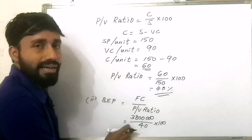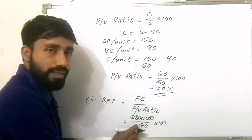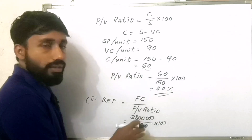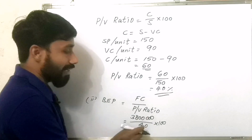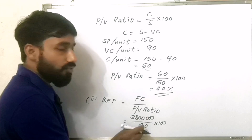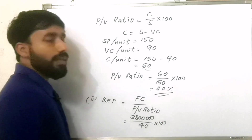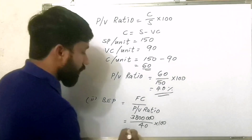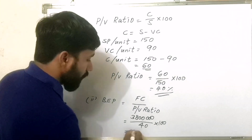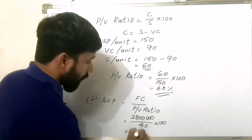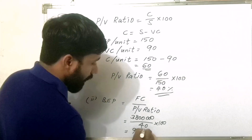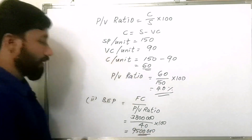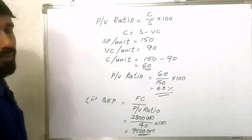That is 38 lakhs divided by 40%, which gives us 95 lakhs. This is the Break-Even Point.